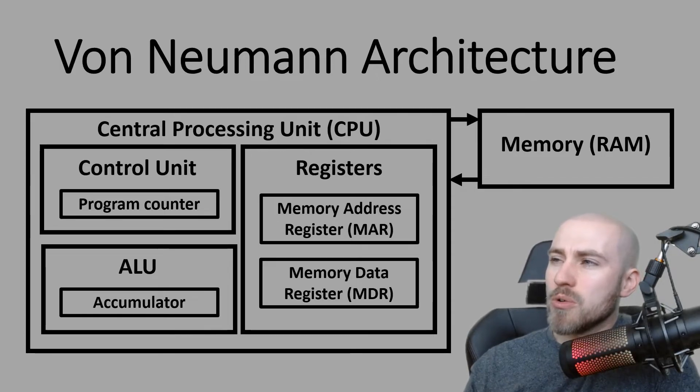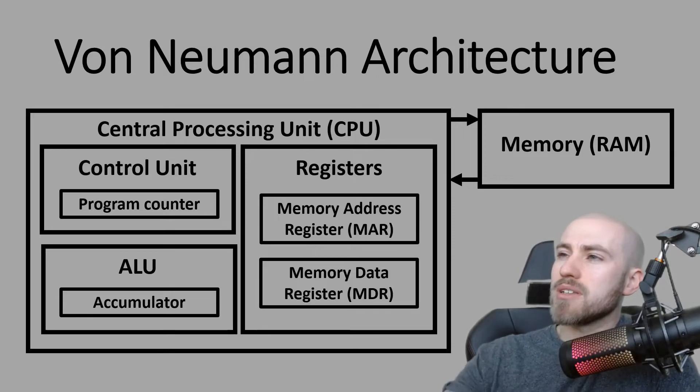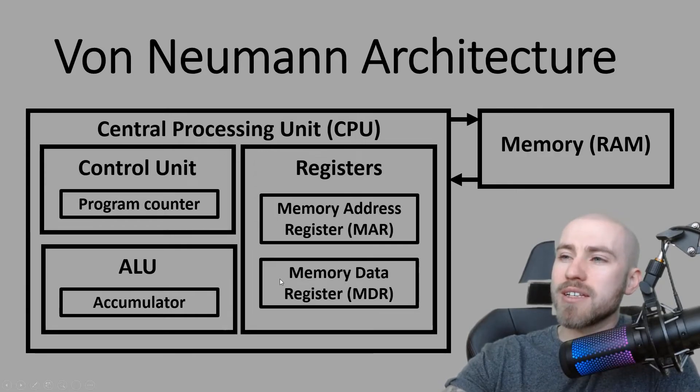Now the CPU at that point knows that it needs to look in memory address register one, which is in RAM or main memory. So at that point it will do the fetch part of this cycle where it travels down to RAM and it will fetch whatever's in memory address one, and it will bring it back and it will store it in the memory data register.